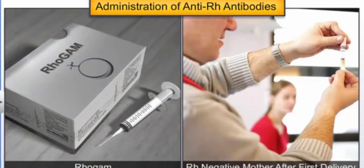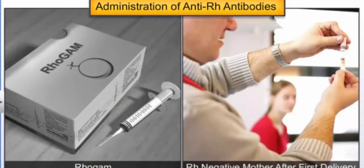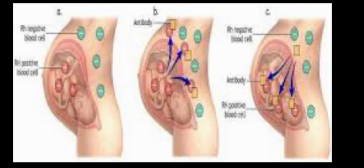Rh and ABO incompatibility can be prevented by knowing the blood group types. In this module we learned about Rh incompatibility leading to erythroblastosis fetalis, in which the erythrocytes of the fetus get destroyed due to a mismatch of the Rh antigen. Thank you.